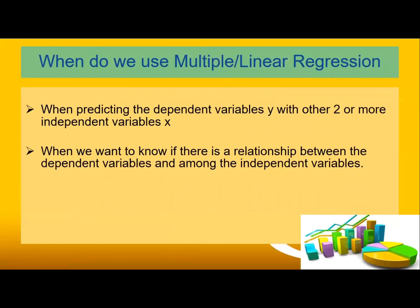When do we use multiple linear regression? We use it when predicting the dependent variable y with two or more independent variables x, where x is independent and y is always the dependent variable. We also use it when we want to know if there is a relationship between the dependent variable and the independent variables.